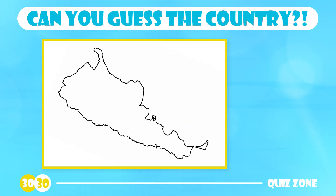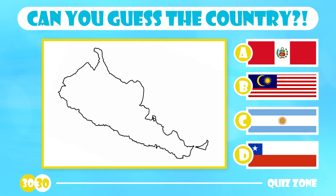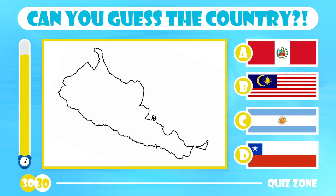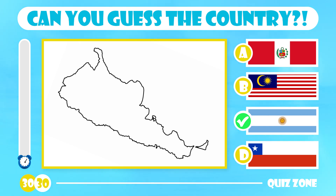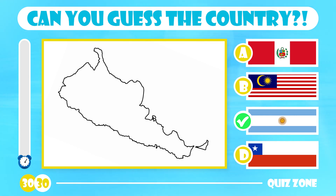Do you know which country this is? Peru, Malaysia, Argentina or Chile? Argentina is located in an area known as the Southern Cone of South America. The country is the eighth largest country in the world with a landmass of 2,780,400 square kilometers.